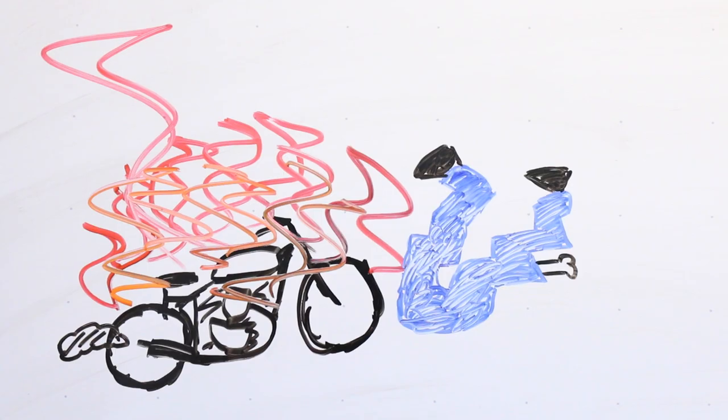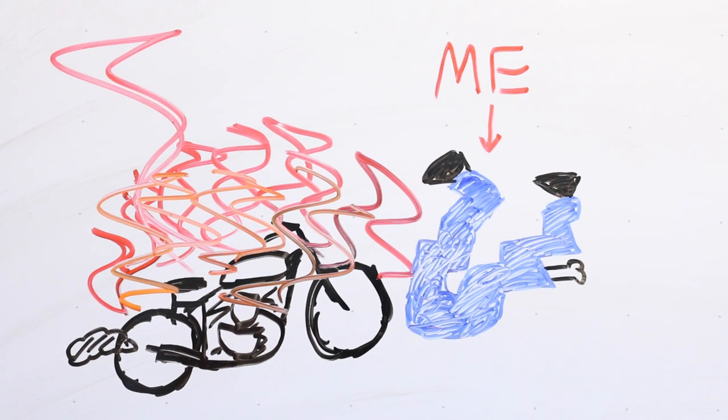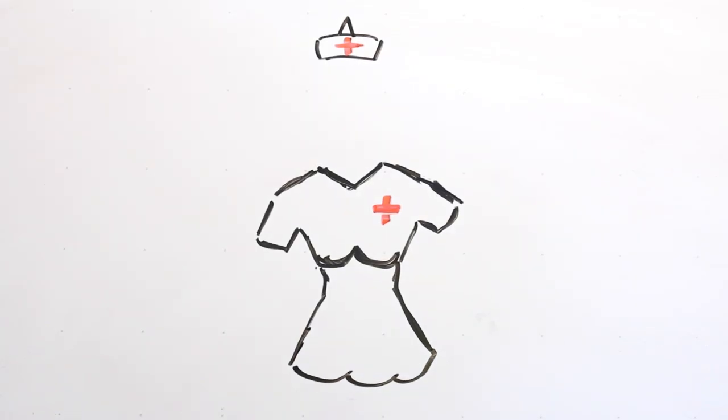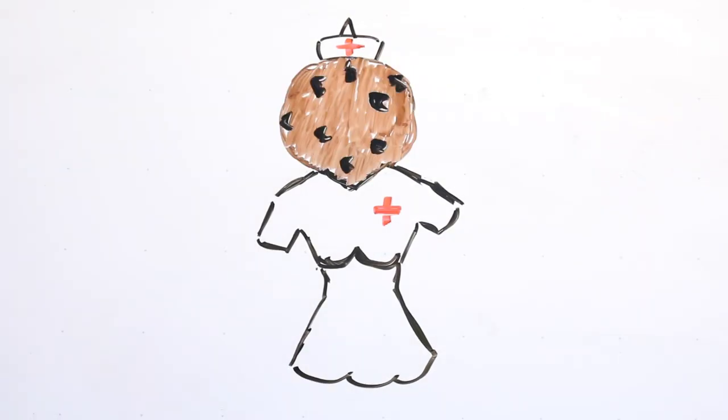Years later, I got into a motorcycle accident, which crippled my legs. They still caused me a lot of issues. While recovering, I fell in love with this nurse named Cookie. She was beautiful. We were meant to get married, but I couldn't go through with it.